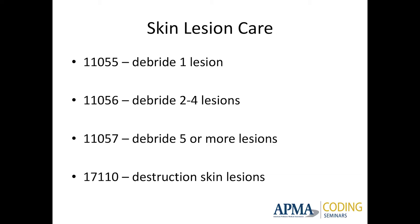Generally these are going to be hyperkeratotic lesions for us, though not always. 17110 is destruction of skin lesions — typically you'd use this if you're using any type of destructive chemical agent: canthrone, salicylic acid, trichloroacetic acid, 5-FU, whatever destructive agent you're going to use. Even in dermatology, it's an attempt at destruction — it doesn't mean it's successful every time, so you may have to repeat that periodically. Typical diagnoses would be wart, neoplasm, or neoplasm of uncertain behavior of skin.